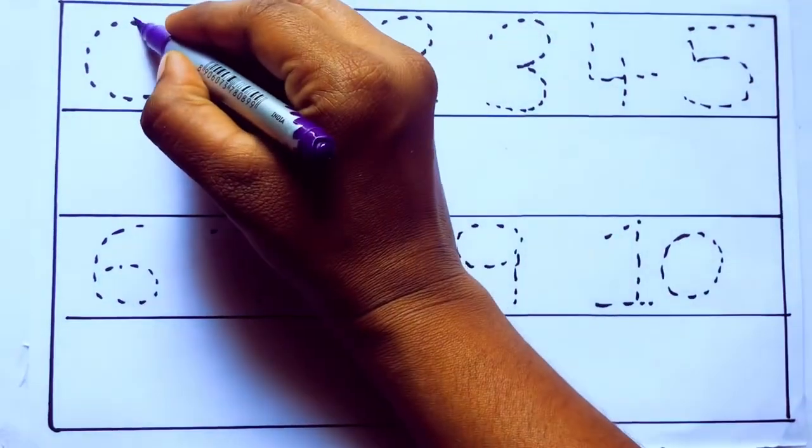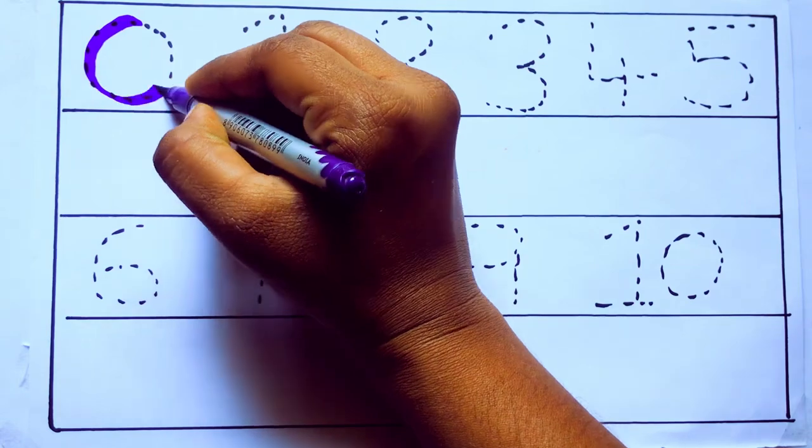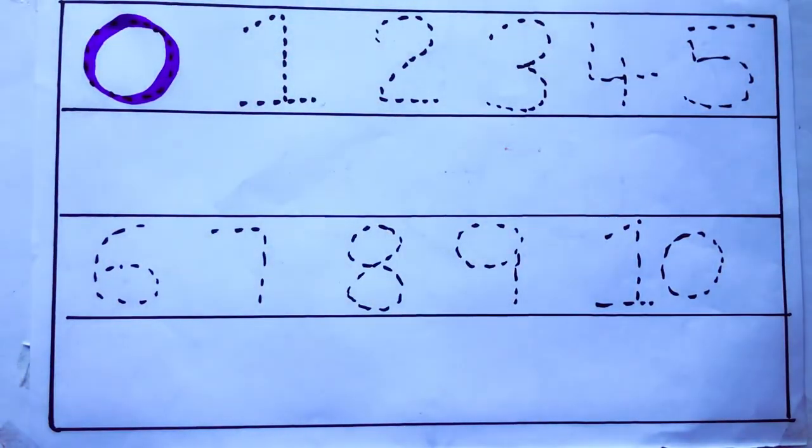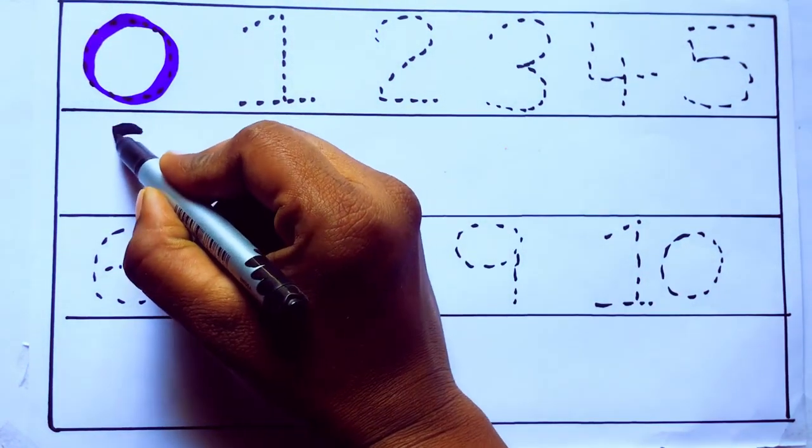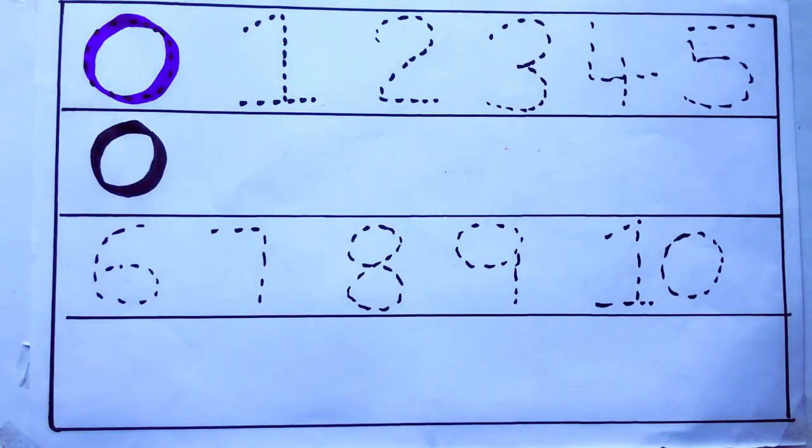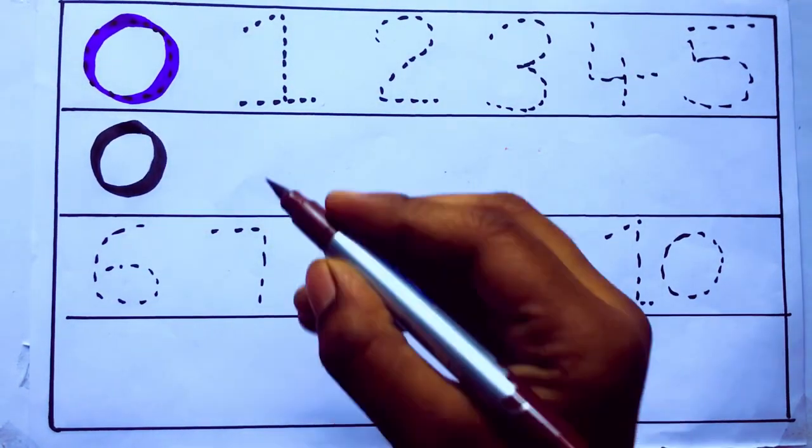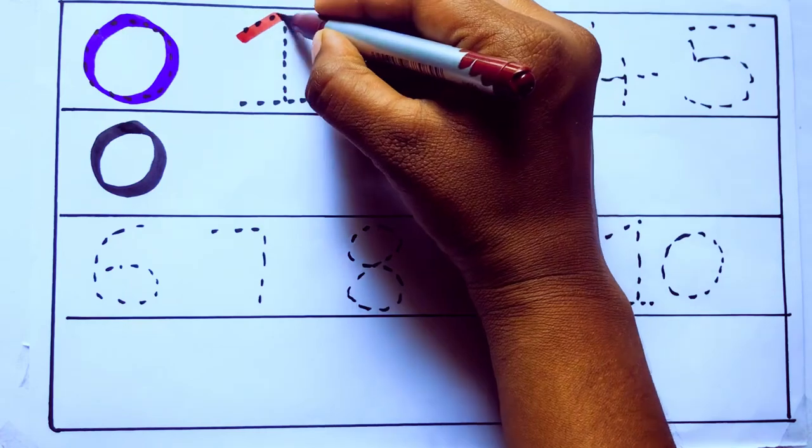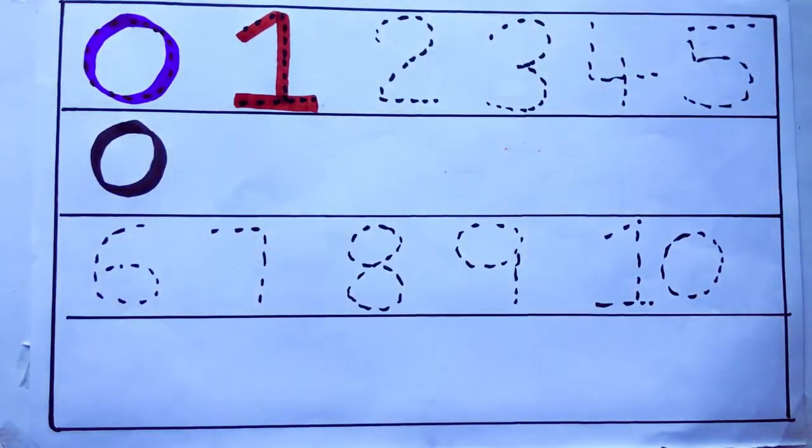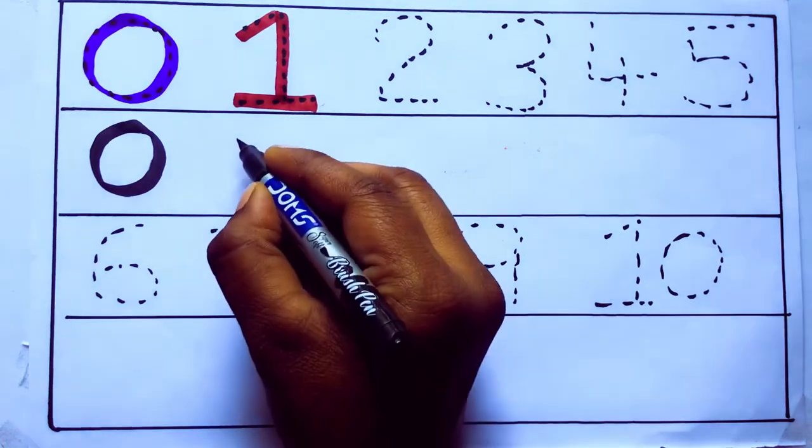Violet color 0, Z-E-R-O. Brown color 1, O-N-E, 1. Number 1.